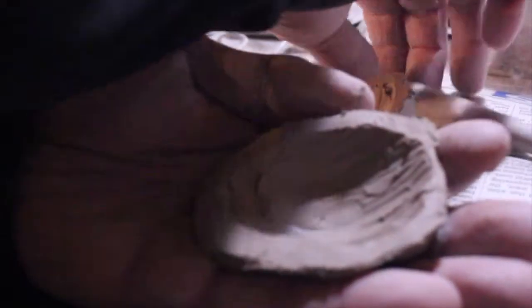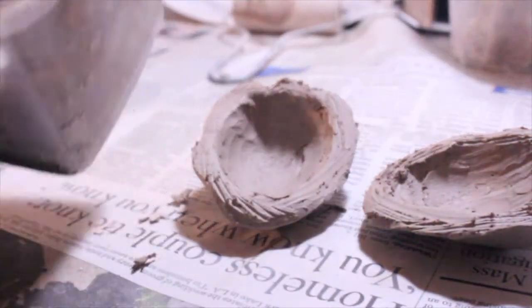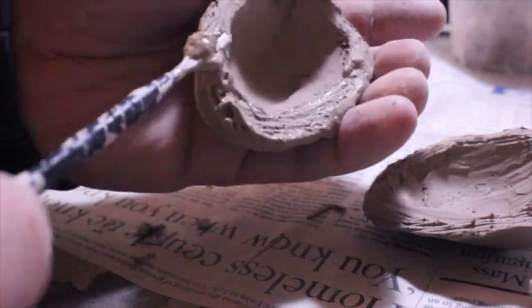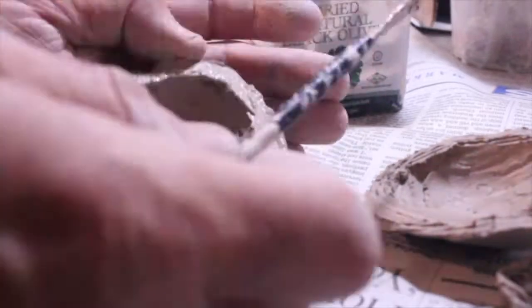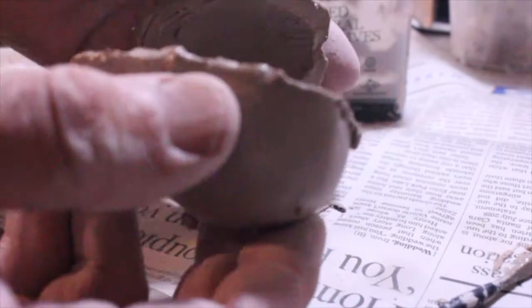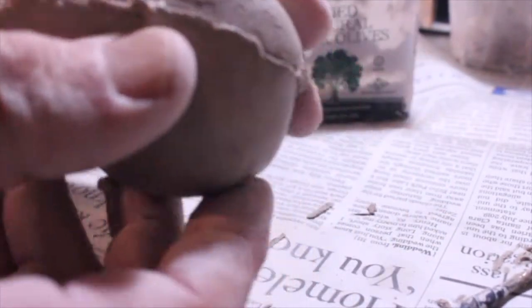Now you're going to score the edges. Take your slip, put it on the edge here, and then take both of these and you join them back together. Put your egg back together.